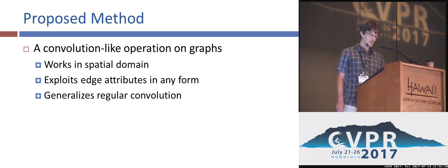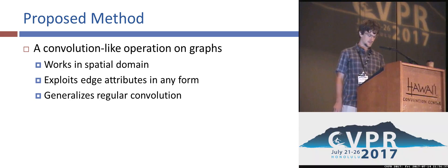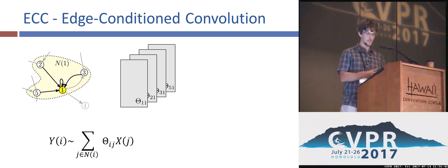So in this work, we present a spatial convolution operation on graphs which is able to exploit edge attributes. These properties allow us to show that our method generalizes the regular grid convolution on graphs.